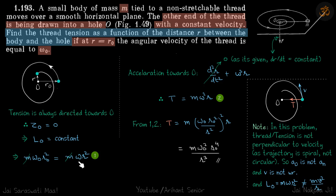So for that we are going to use F equals ma. What is the acceleration towards center? Because the thread is being pulled it will have acceleration, and because it is rotating it will have acceleration because of the rotation also. So net acceleration towards center will be d2r by dt square plus omega square r.